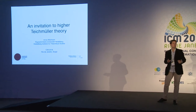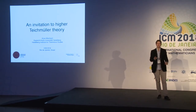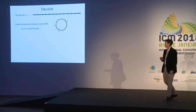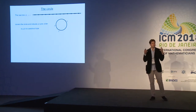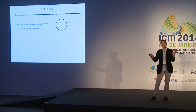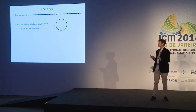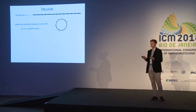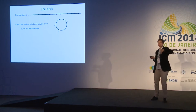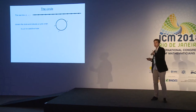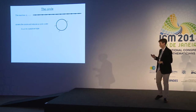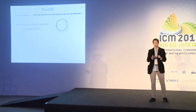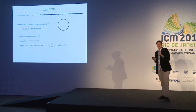Before I explain what Higher Teichmüller Theory is, I want to start with a very simple object which will play an important role: the circle and the real line. If we look at the real line with its order and take its quotient, the circle comes with a positive orientation. If we have three points X, Y, Z on the circle, we say they are positively oriented if we see them in this order going around the circle with the interior to our left-hand side. We call X, Y, Z a positive triple.